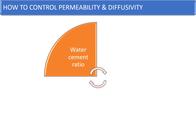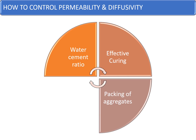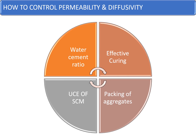How do we control permeability and diffusivity in concrete? The first method is water-cement ratio — by controlling it, you will be able to control the permeability. By improving the effectiveness of curing, you will be able to do a lot with permeability and diffusivity. Packing of aggregates — the gradation, whether well-graded or gap-graded — will have impact on the permeability and diffusivity. The use of supplementary cementitious materials, because the particles of mineral admixtures are smaller than cement particles, thereby achieving closer packing of the mix and reducing voids.